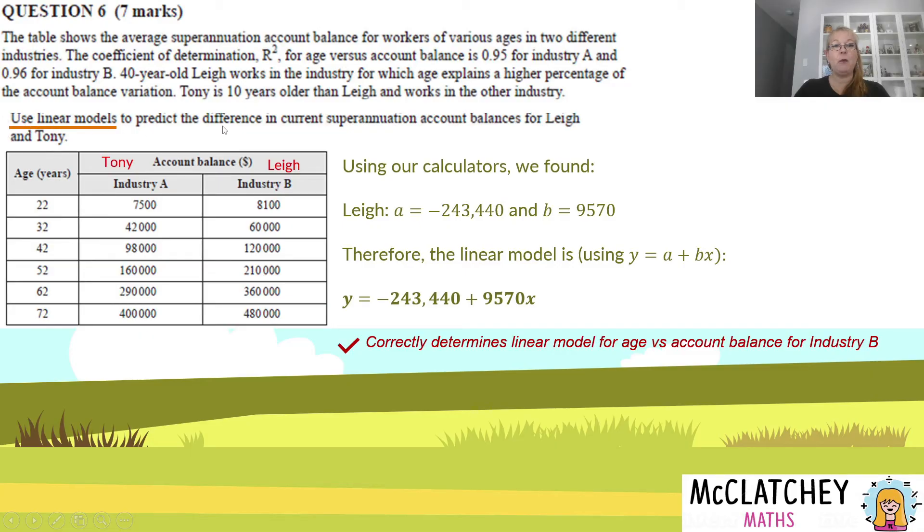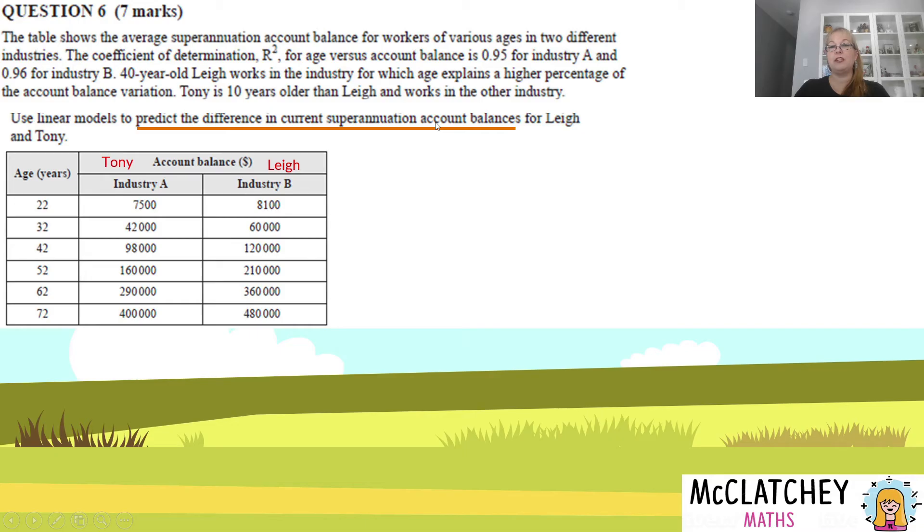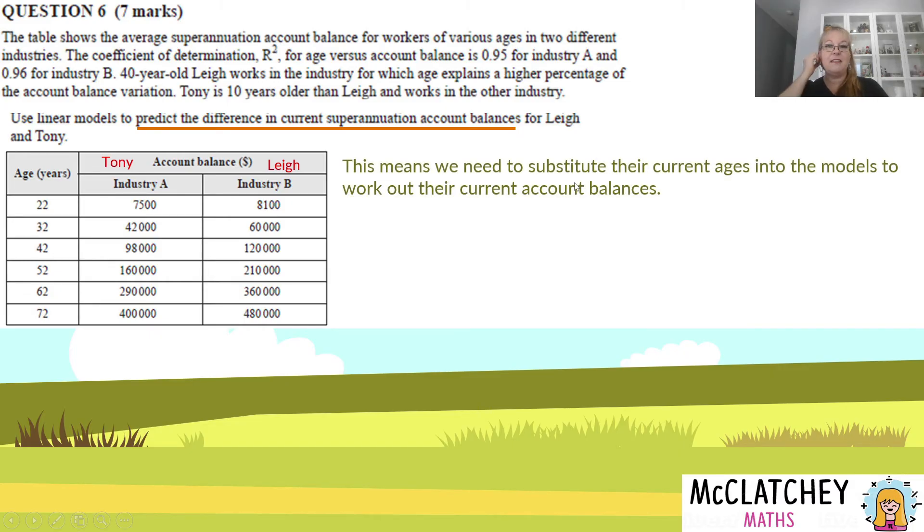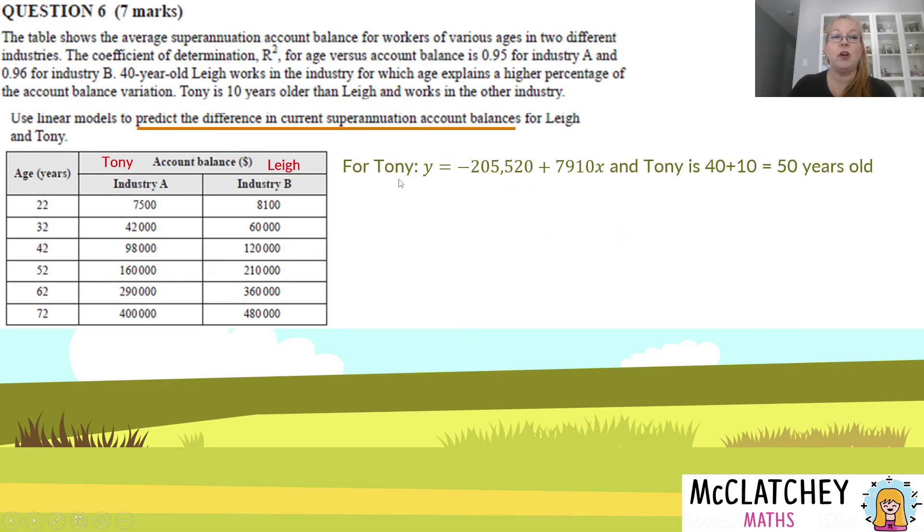Now we've found these linear models, but we need to predict the difference in superannuation balances for Lee and Tony. This means we need to substitute their current ages to get their current balance. You might think, well, we're told Lee's 40, I can guesstimate from the table that it might be about $92,000. That's not going to be good enough because they've told us to use a linear model, not to guesstimate or interpolate in between. Estimating from that table is not appropriate. For Tony, we know Tony is 10 years older than Lee. 40 plus 10 makes Tony 50 years old. We're going to substitute x equals 50 into the equation. Working that out on the calculator, the value of Tony's super balance right now is $180,980.